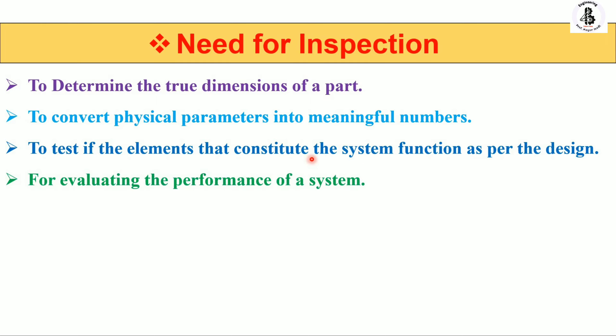The fourth need for inspection is for evaluating the performance of systems. You need to measure the system performance, the machine performance, and the performance of particular measurement instruments. Some organizations also need to measure their overall performance through inspection.